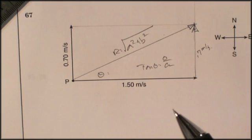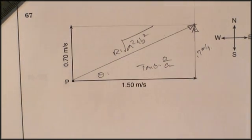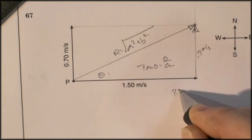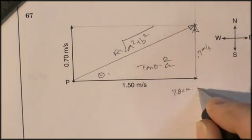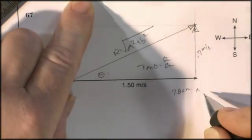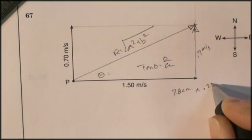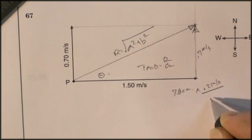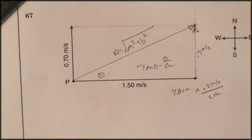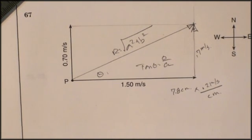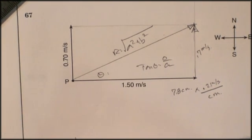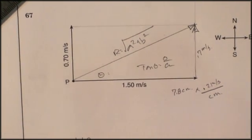And then I take my scale. And if I say 7.8 centimeters times my scale, which is 0.21 meters per second per centimeter, I can cancel those out. I'm left with meters per second. 7.8 times 0.21. I can say that's 1.63 meters per second, which is greater than 1.5, but less than the sum of the two of them. That works.